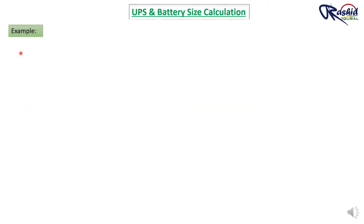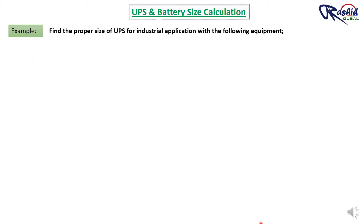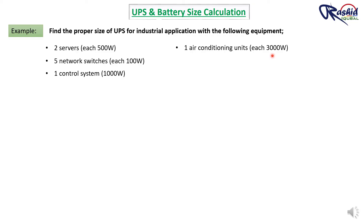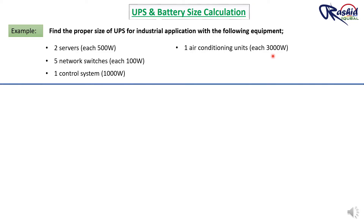Let me take one example to help you understand better. Find the proper size of UPS for an industrial application with the following equipment: two servers each consuming 500 Watts, five network switches each at 100 Watts, one control system at 1000 Watts, and one air conditioning unit at 3000 Watts.